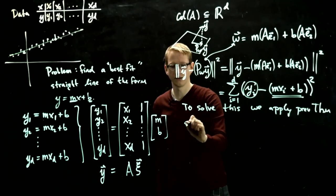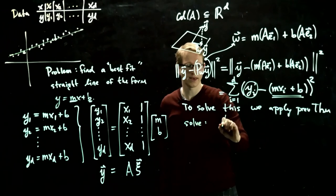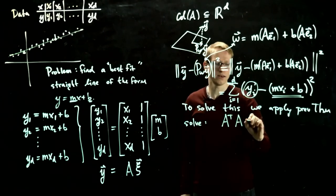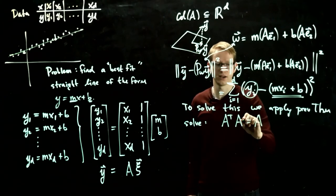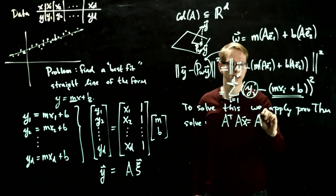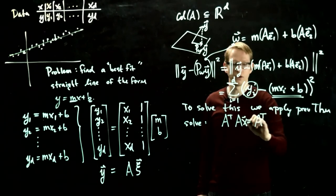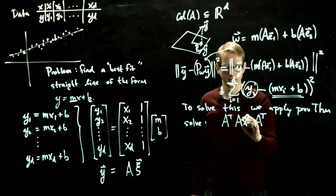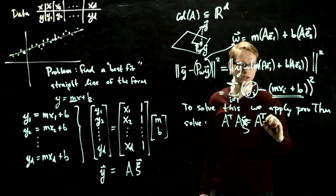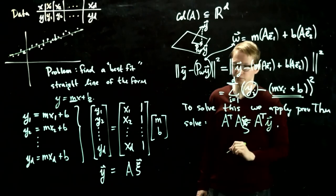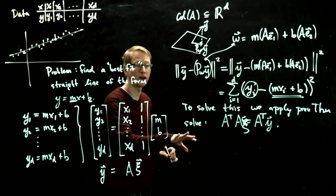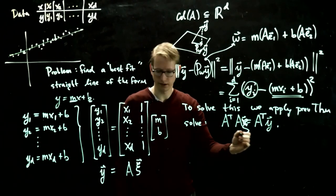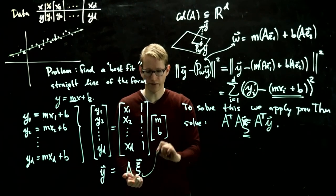And we know that to solve this, we can solve instead A transpose A equals A, sorry, A transpose A x equals A transpose, oh, and x is xi. Let me write this as xi, and A transpose y. So this is the problem that we want to solve, and we want to solve this for xi, and xi is our vector of unknowns.